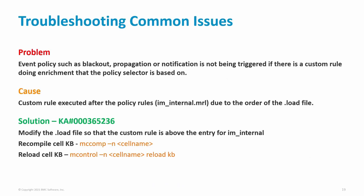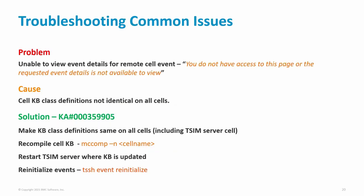Let's now look at troubleshooting some common issues with the cell. If there is an event policy — such as blackout, propagation, or notification — that is not being triggered, and the selector for the policy is based on enrichment by a custom rule, this will be due to the custom rule executing after the policy-related rules in im-internal.mrl. The solution is to modify the .load file in the cell KB rules directory so that the custom rule is executed before im-internal, then recompile and reload the KB. You may also see a problem in the TrueSight console where clicking on event details from a remote cell event shows nothing or an error. This can occur if class definitions are not the same on all cells including the TSIM server cell. Compare class definitions on all cells, add missing classes to the TSIM server cell, recompile the cell KB, restart the TSIM server, and on the TrueSight Presentation Server execute: TSSH event re-initialize to re-initialize the Elasticsearch data.